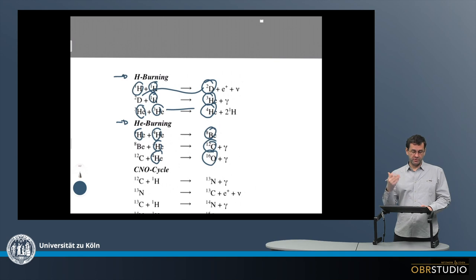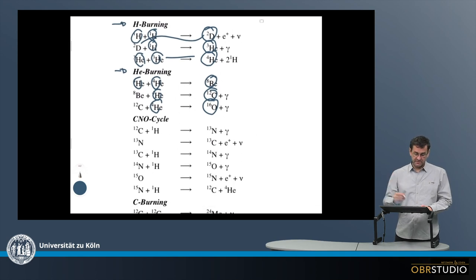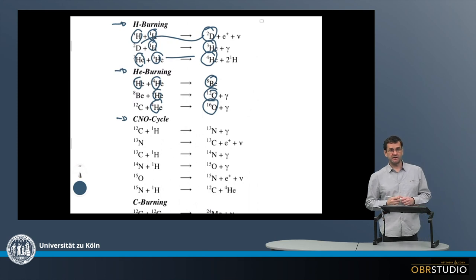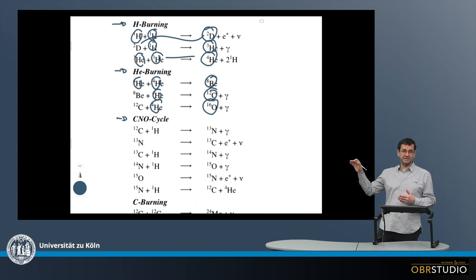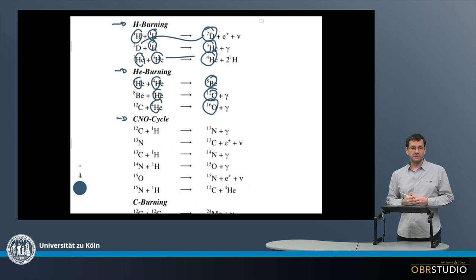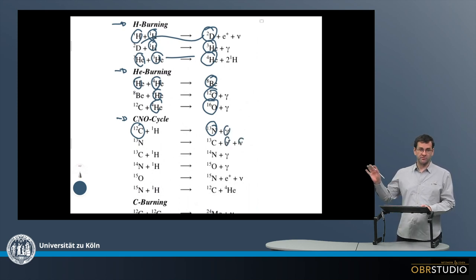After helium burning, the next step that then comes is the CNO cycle. It's called cycle because the element at the beginning here is also produced at the end, which means that this entire cycle of fusion can start over. So let me show you. It starts with carbon-12 forming nitrogen-13. And by the way, there's always some gamma rays or electrons or neutrons formed, but I'm neglecting these here to be a bit more brief.